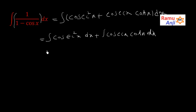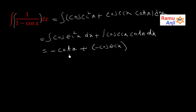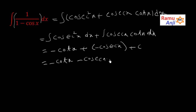What is the integral of cosecant²x? It is minus cot x. And the integral of cosecant x · cot x is minus cosecant x. These are the standard formulas. So the final answer is minus cot x minus cosecant x plus C.